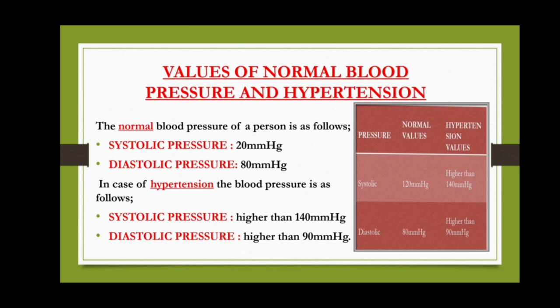In case of hypertension, the blood pressure of a person is: systolic pressure higher than 140 mm Hg, and diastolic pressure higher than 90 mm Hg.